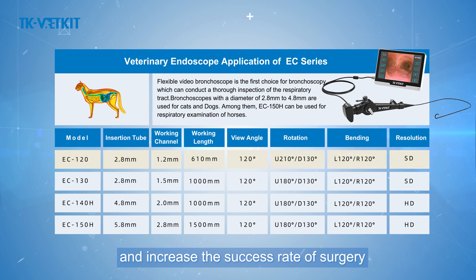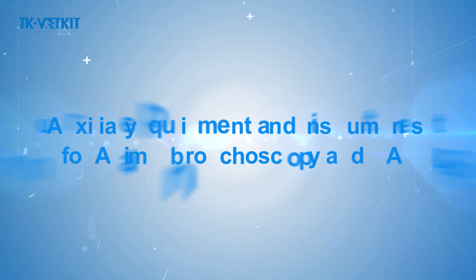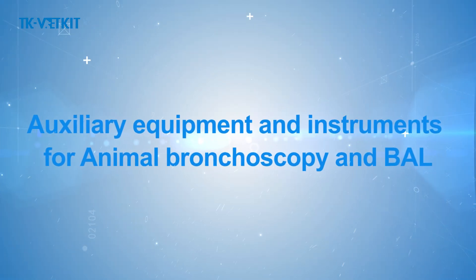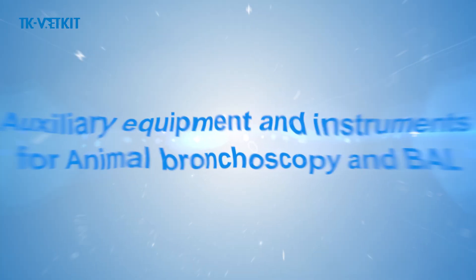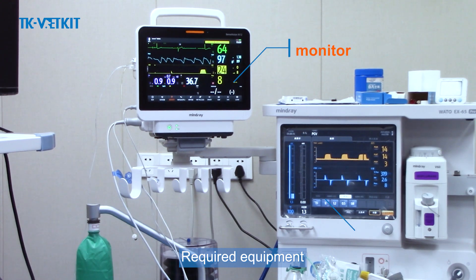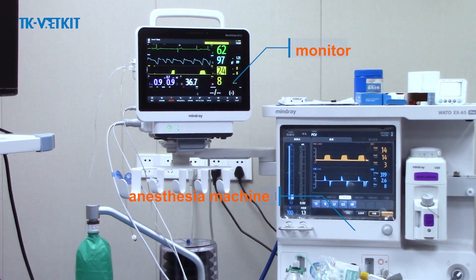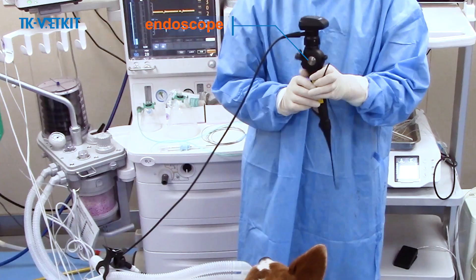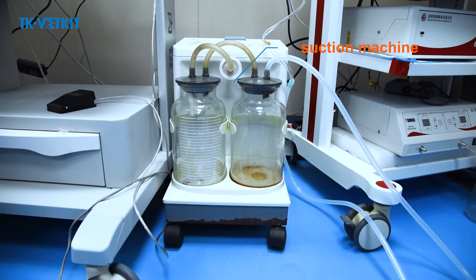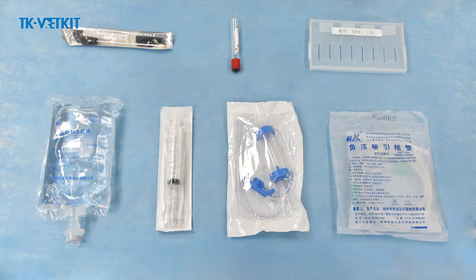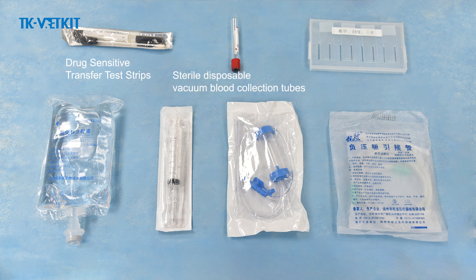Auxiliary equipment and instruments required for animal bronchoscopy include: monitor, anesthesia machine, endoscope, suction machine. Supplies and medications needed include: drug sensitivity test strips, sterile disposable vacuum blood collection tubes, slides, saline, 20 ml syringes, disposable sputum collector, and disposable suction pipe.